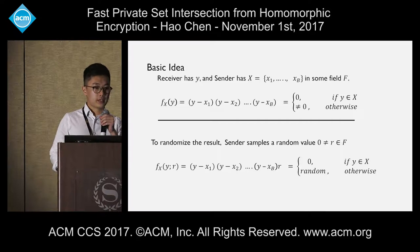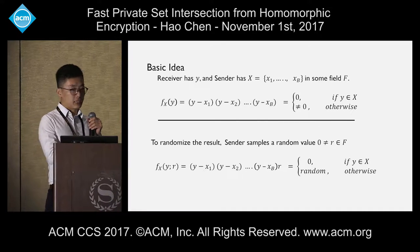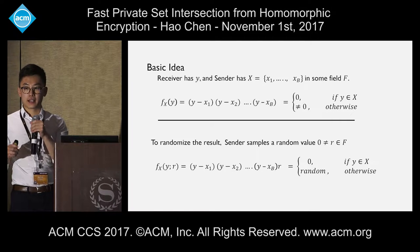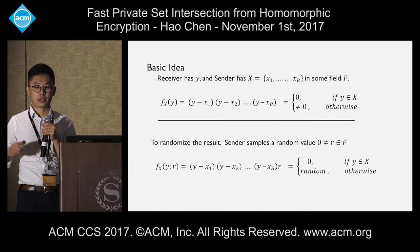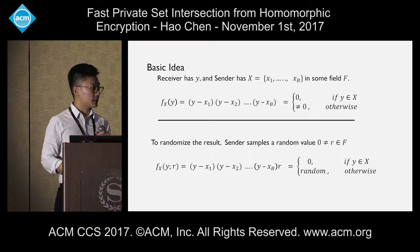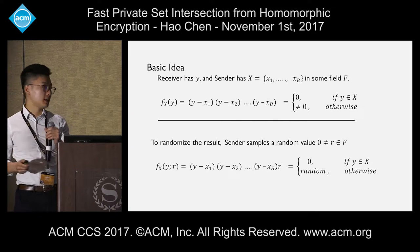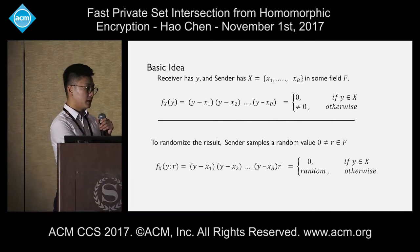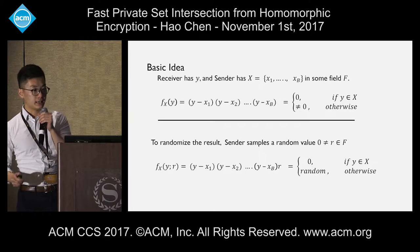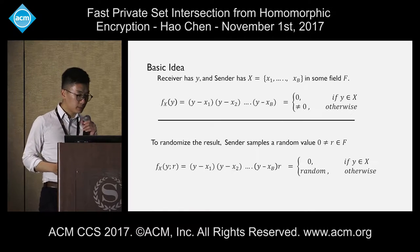To do this homomorphically, we just need the receiver to send a homomorphically encrypted version of Y. The sender will evaluate the polynomial using FHE and send back the result. The receiver will then decrypt the result, get the evaluated polynomial, and regard the element to be in the intersection if the plaintext is zero. That's pretty simple.